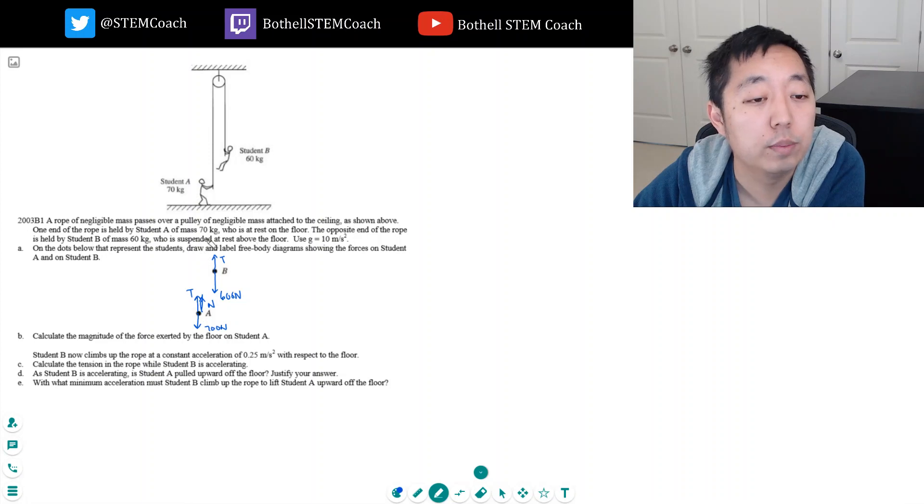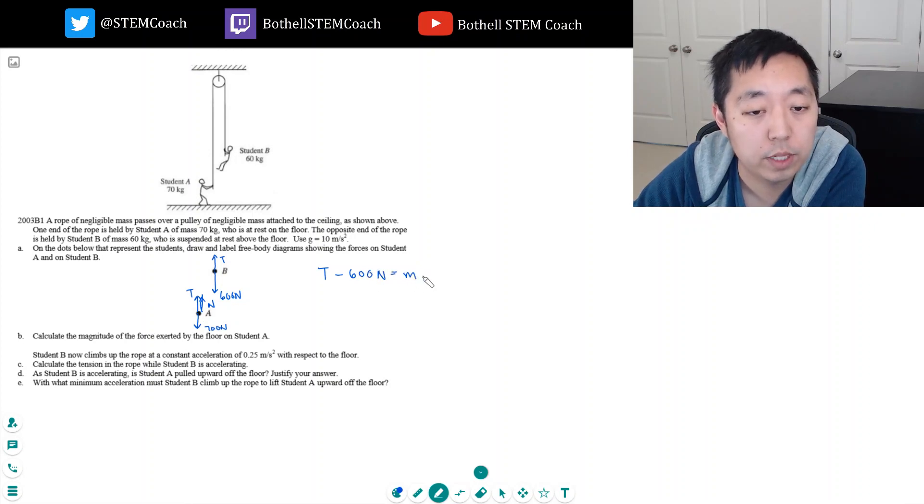He is at rest, so his net acceleration has to be zero for A and B. Let's set up the net force equation on student B. T minus 600 Newtons has to equal M times A, which is zero, so T has to equal 600 Newtons.